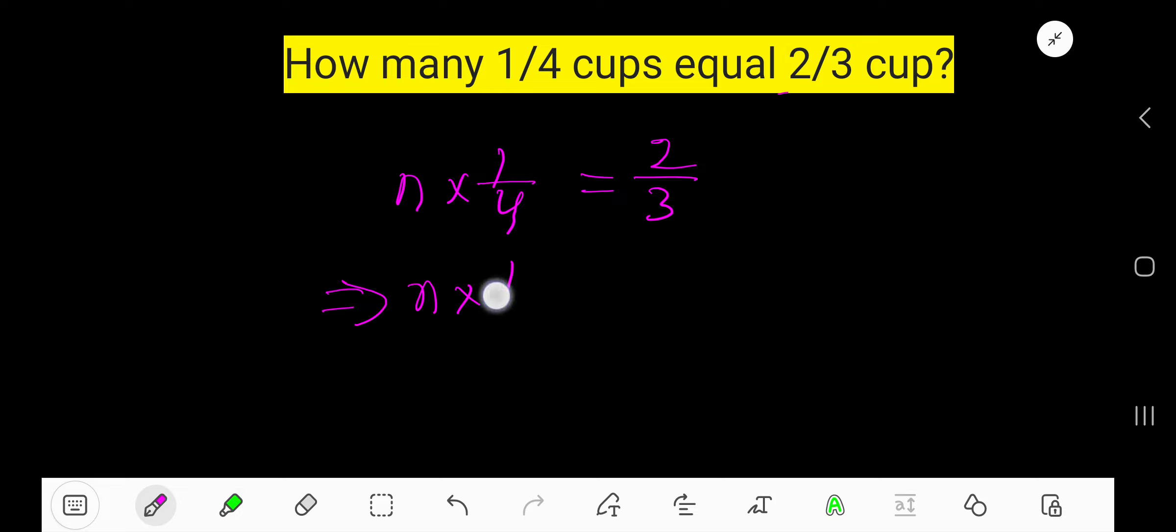To find the value of n, multiply both sides by 4 to free the n. So we are getting n equals two times four, eight over three. This is an improper fraction, so we need to convert this improper fraction.